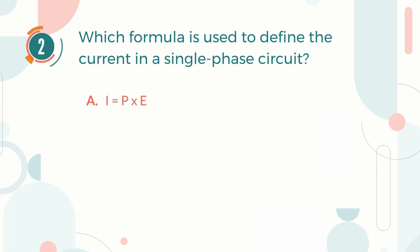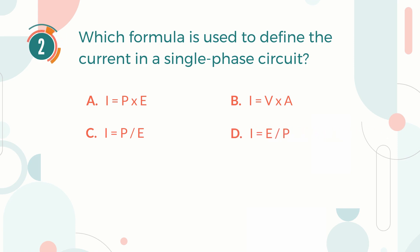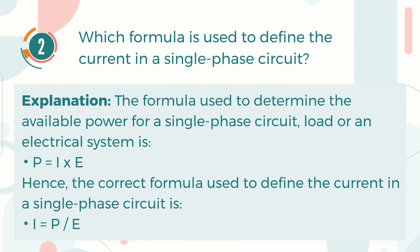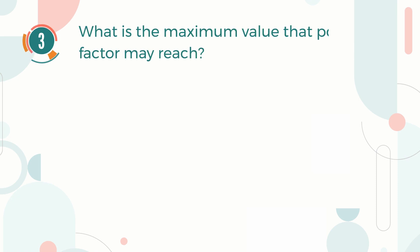Number two: Which formula is used to define the current in a single phase circuit? A) Current equals power multiplied by voltage, B) Current equals voltage multiplied by ampere, C) Current equals power divided by voltage, D) Current equals voltage divided by power. The correct answer is C, current equals power divided by voltage. The formula used to determine the available power for a single phase circuit is power equals current multiplied by voltage, hence current equals power divided by voltage.